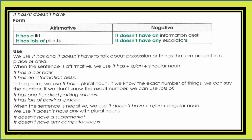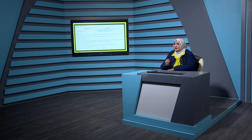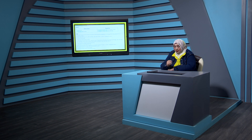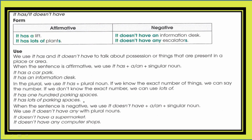In the plural, we use 'it has' followed by a plural noun. If we know the exact number of things, we say the number. If we don't know the exact number, we can use 'lots of'. This is the same way as with 'there is' — if we know the number we use it, like four or six, but if we don't, we use 'lots of'.